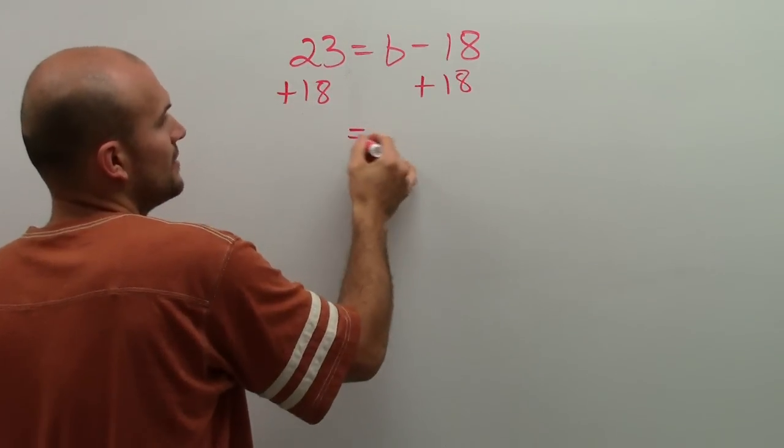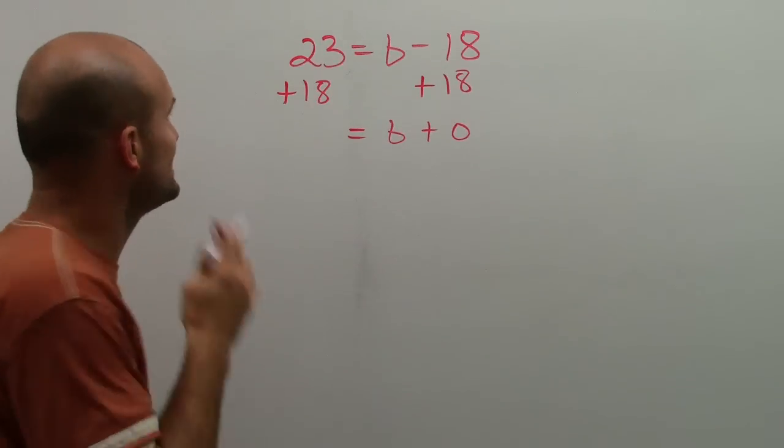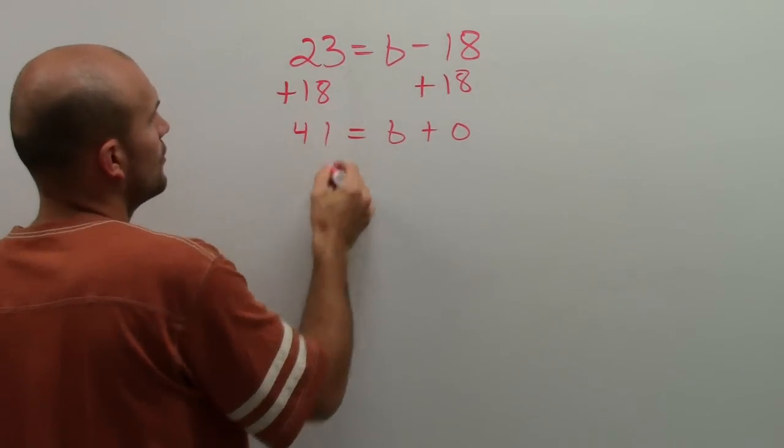So now I have b, negative 18 plus 18 gives us 0. 23 plus 18 is going to give us 41.